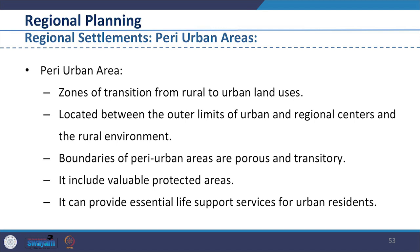Peri-urban areas are zones of transition from rural to urban land uses, located between the outer limits of urban and regional centers and the rural environment. The boundaries of peri-urban areas are porous and transitory as urban development extends into rural, agriculture and industrial land. Peri-urban areas might include valuable protected areas, forested hills, preserved woodlands, prime agricultural lands and important wetlands which may require conservation. If planned properly, they can provide essential life support services for urban residents.